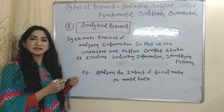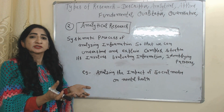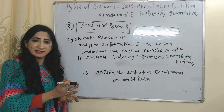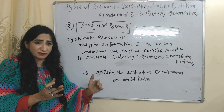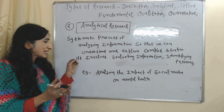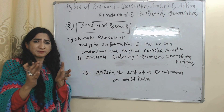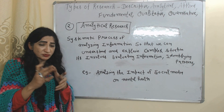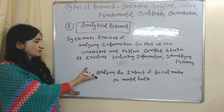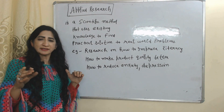Next is analytical research, where we systematically analyze existing information so that we can understand and explain complex situations. This type of research involves evaluation of information, identifying different patterns, and understanding complex situations by dividing them into smaller parts. We can use this type of research for analyzing the impact of social media on mental health.